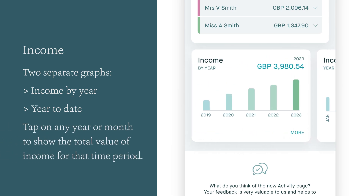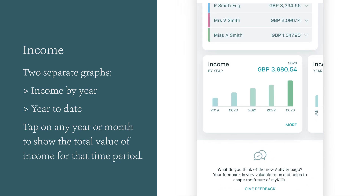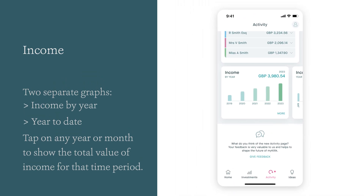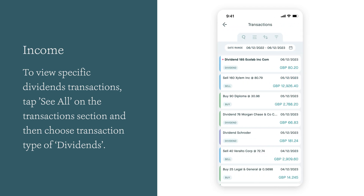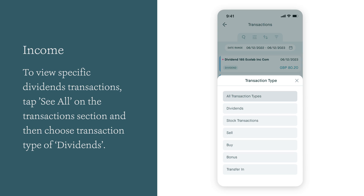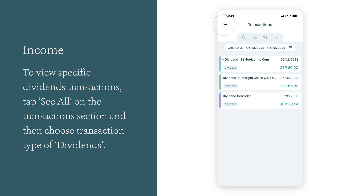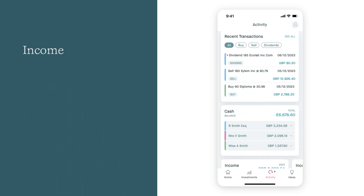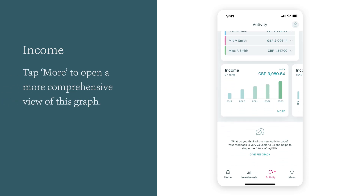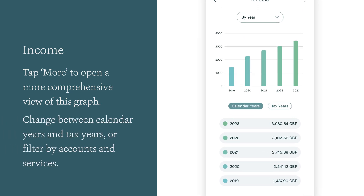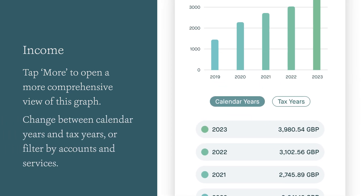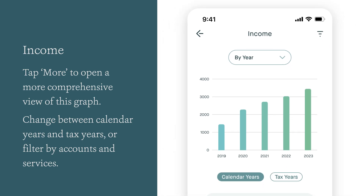You can tap on any year or month to show the total value of income for that time period. To view specific dividend transactions, tap See All on the transaction section and then choose the transaction type of dividends. Tapping More opens a more comprehensive view of this graph, where you can change between calendar years and tax years or filter by accounts and services.